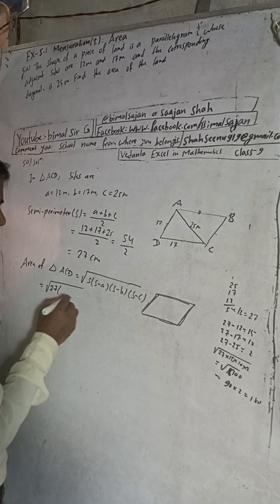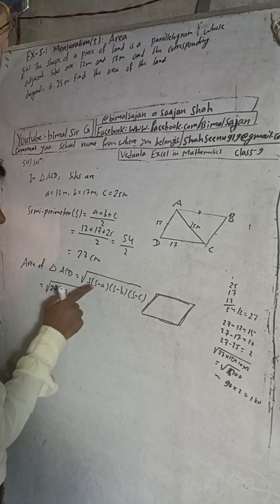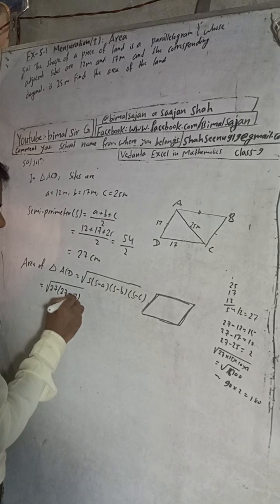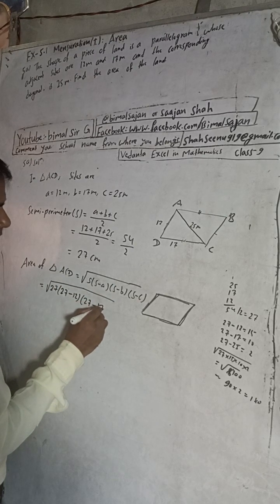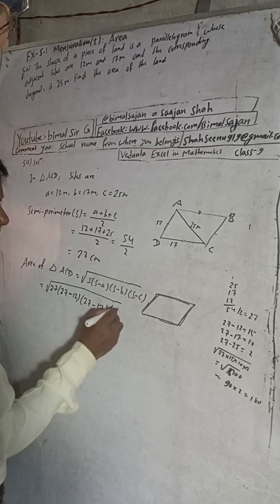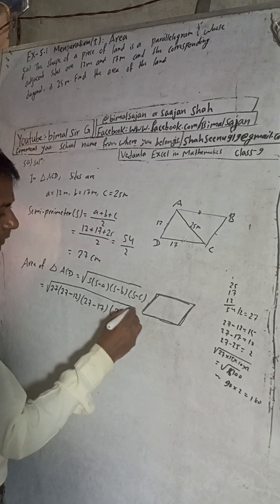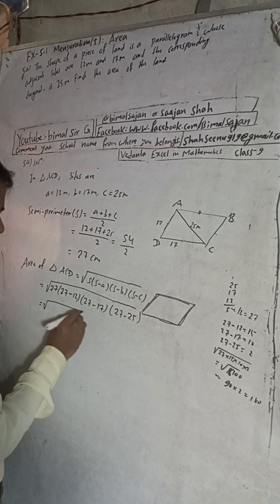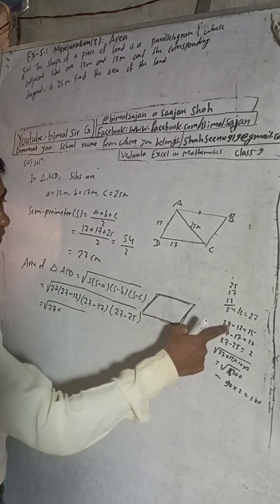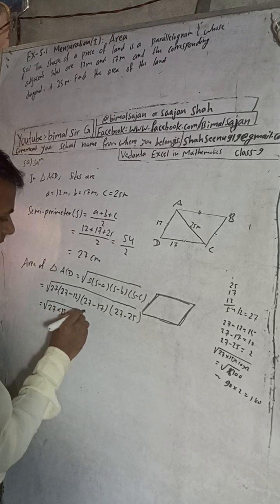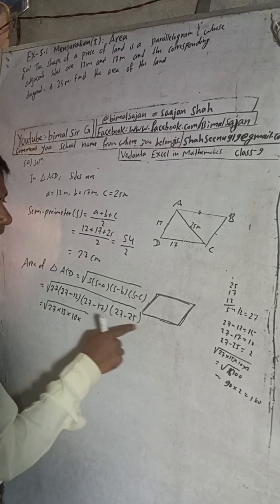S minus A, so S is 27 minus A which is 12, into S minus B, 27 minus B, what is B? B is 17, and again S minus C, that means 27 minus C, what is C value? 25. When we subtract this: 27 minus 12 is 15, and 27 minus 17 is 10, into 27 minus 25, which is 2.